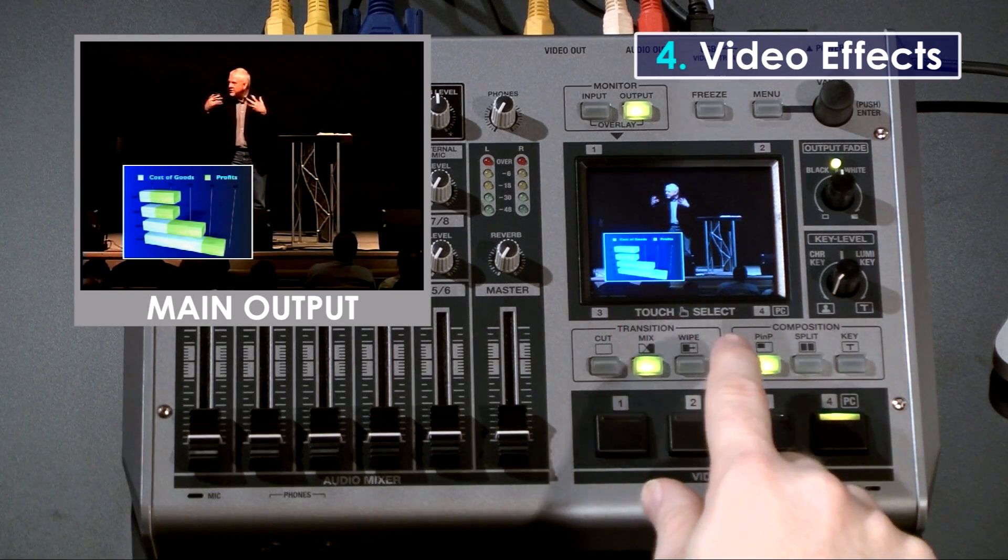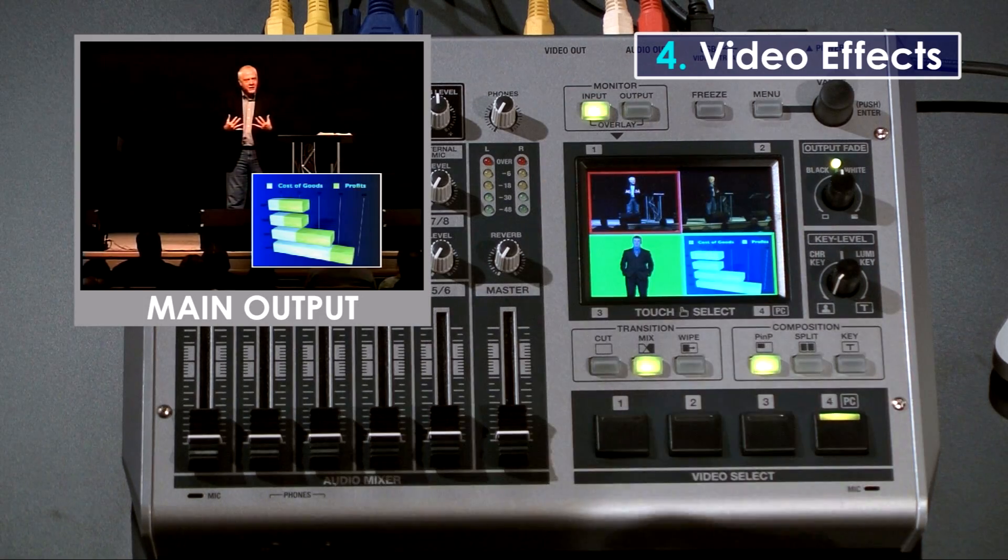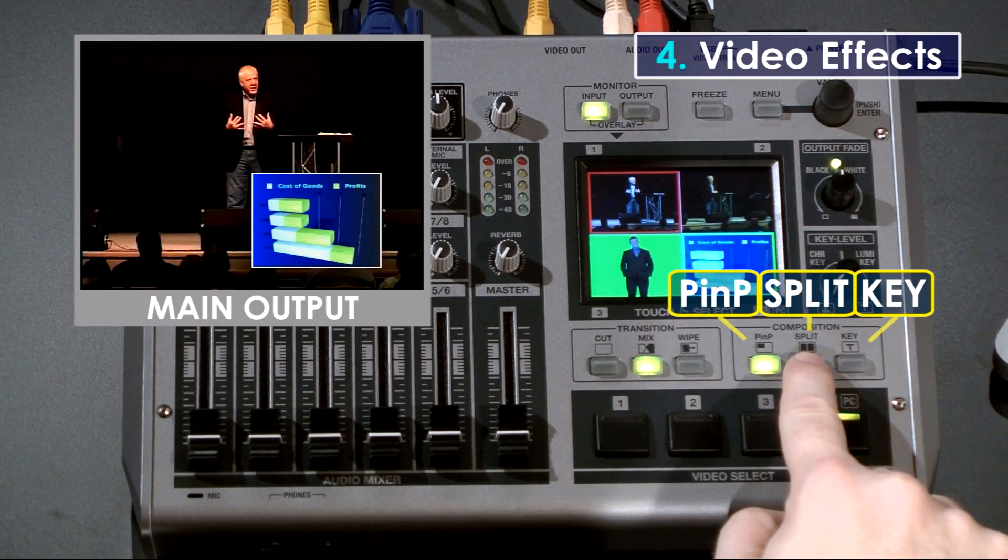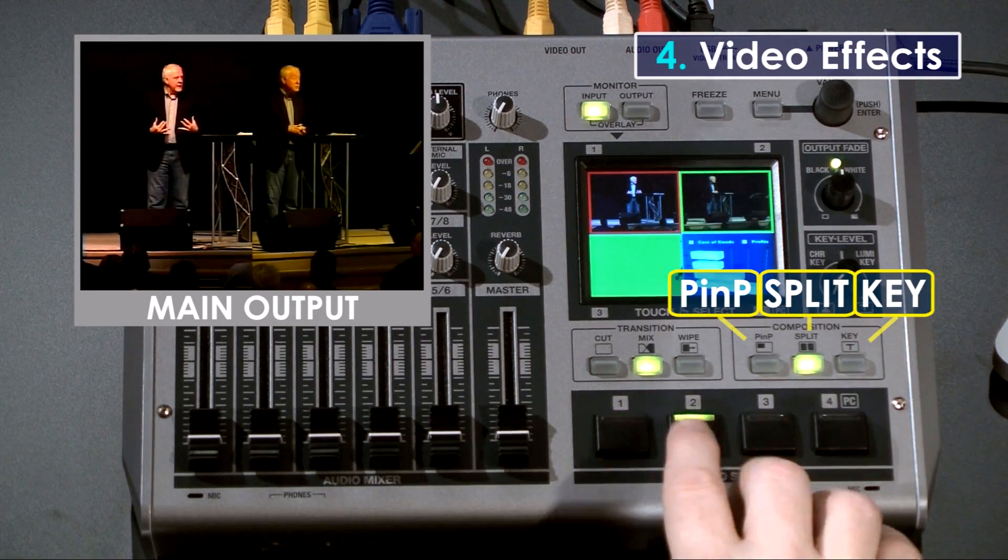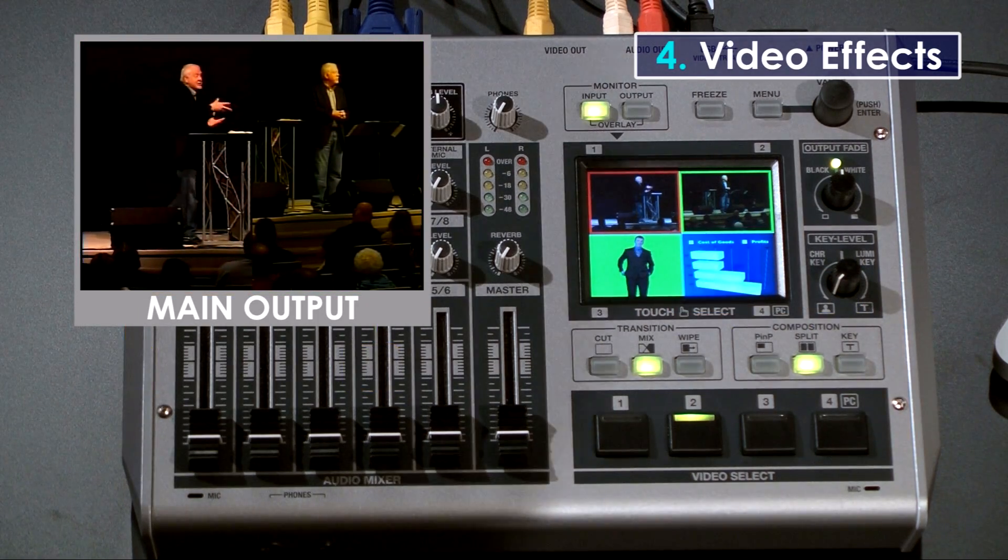You can set up the Picture-in-Picture position with your finger by simply dragging it around on the preview monitor. The Split allows you to split the screen vertically or horizontally to show separate sources on each half.